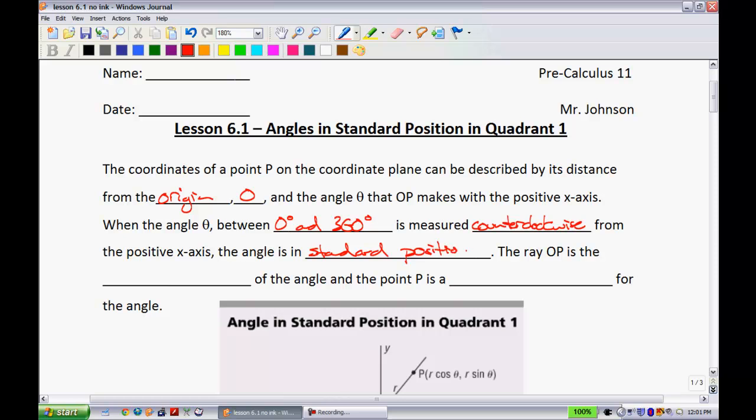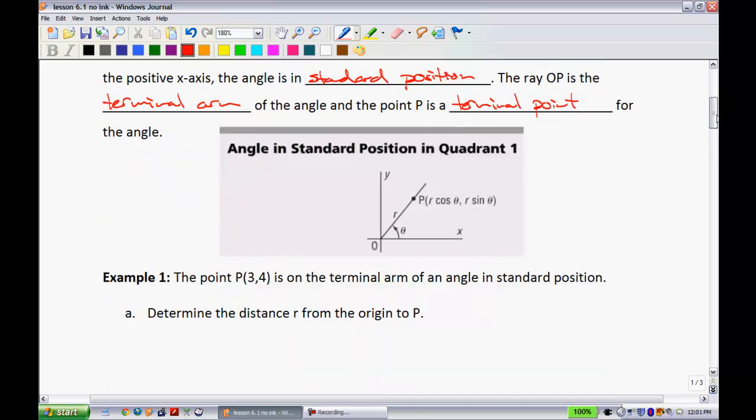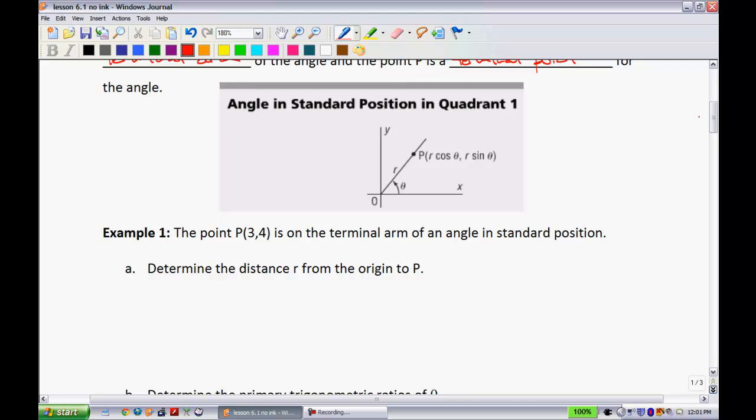Alright, and I'll explain all this in terms of this diagram here in a second. The ray OP is what we call the terminal arm of the angle, and the point P is a terminal point for the angle. So in terms of this diagram right here, let's take a look. Standard position just basically means it's on the Cartesian coordinate plane like we have here, and we're always going to start on the positive x-axis, and we work our way counterclockwise like so.